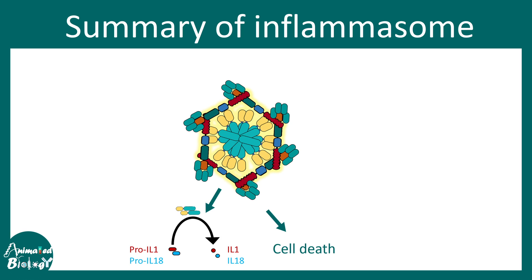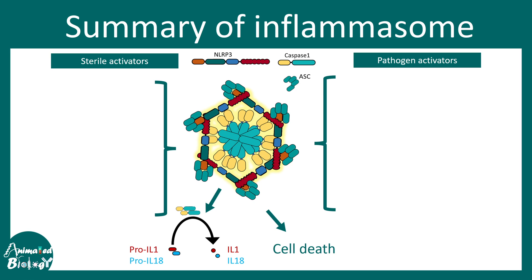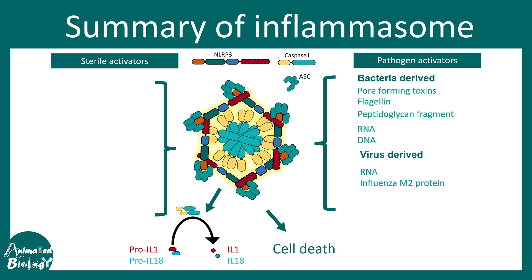To summarize inflammasome: there are three important components — caspase-1, NLRP3, and ASC. There are two types of triggers that can activate the inflammasome. One is pathogen-based triggers, such as bacterial pore-forming toxins, flagellin, bacterial DNA or RNA, viral RNA, viral particle proteins, or fungal-derived proteins.